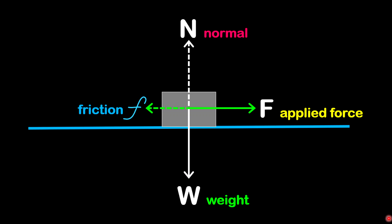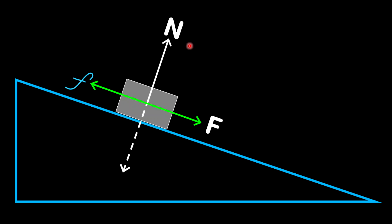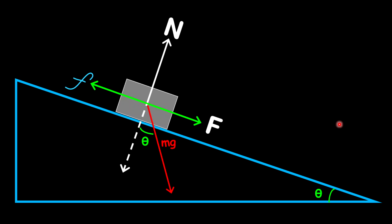Now apply this and consider it on an inclined plane. Notice this object is now on an inclined plane. There is still a normal acting perpendicular to the surface. The frictional force is still there and the applied force is still there, and they're acting parallel to the incline. There will also be the weight of the object acting at an angle — this angle is the same as the slope or the angle of the inclined plane.